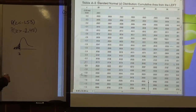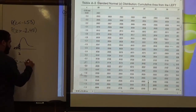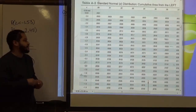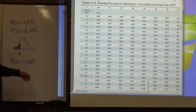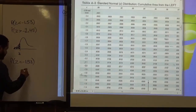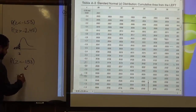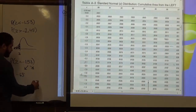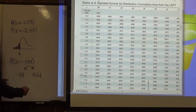Our first problem says the probability that z is less than negative 1.53. Using the negative z-score chart, we take this decimal number and divide it: the sign and first two digits form one part, while the remainder of the number gets separated into a second piece.